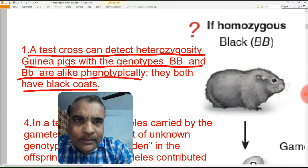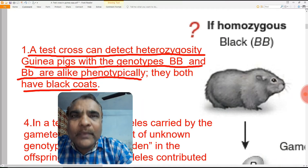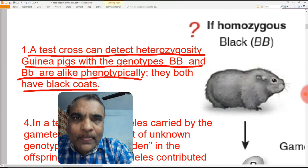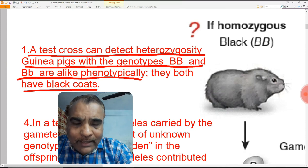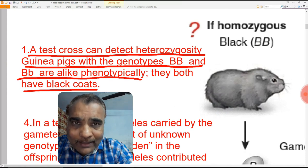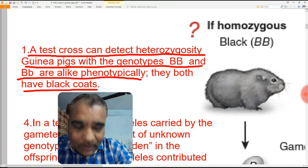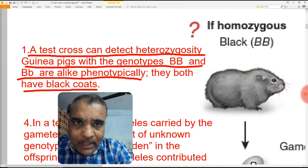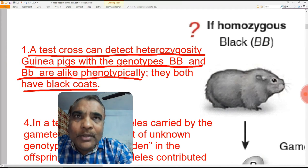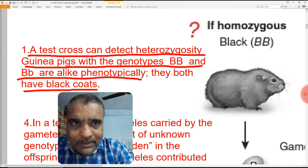There are many different types of coat color in the guinea pig — as shown in the photograph in the previous lecture. If you see a black guinea pig, how will you find out whether it has genotype BB or Bb? How will you determine if it is homozygous or heterozygous? From the naked eye, we cannot tell whether a guinea pig is homozygous or heterozygous.